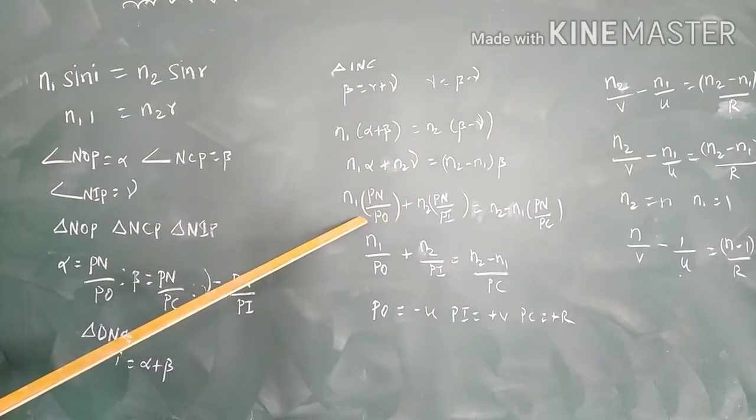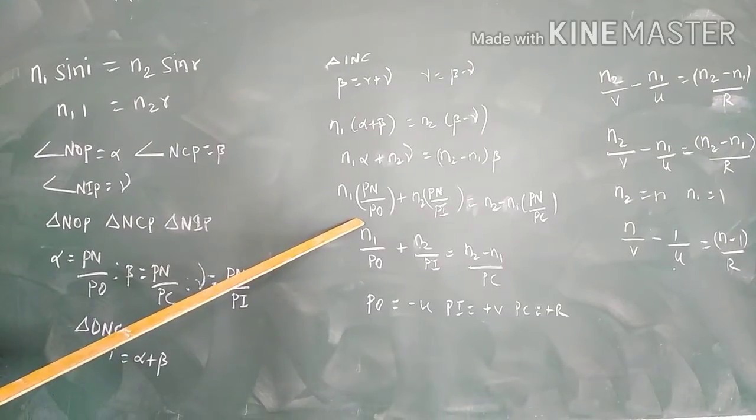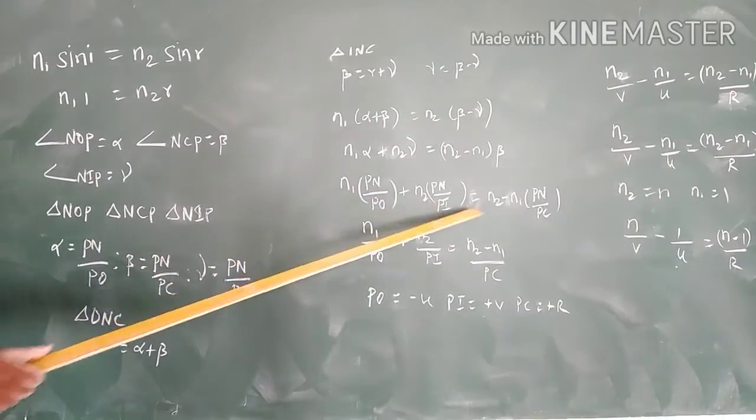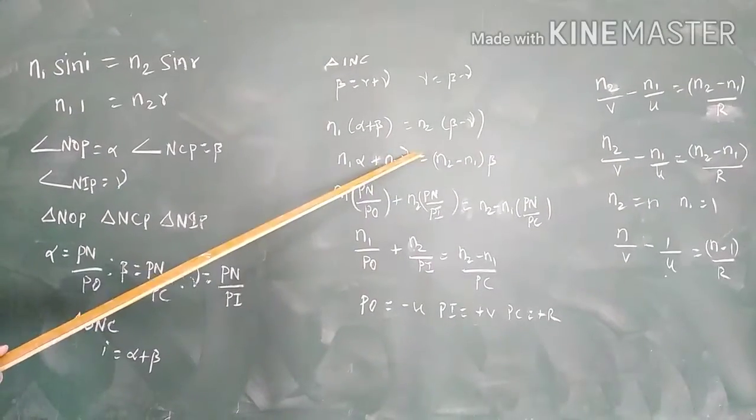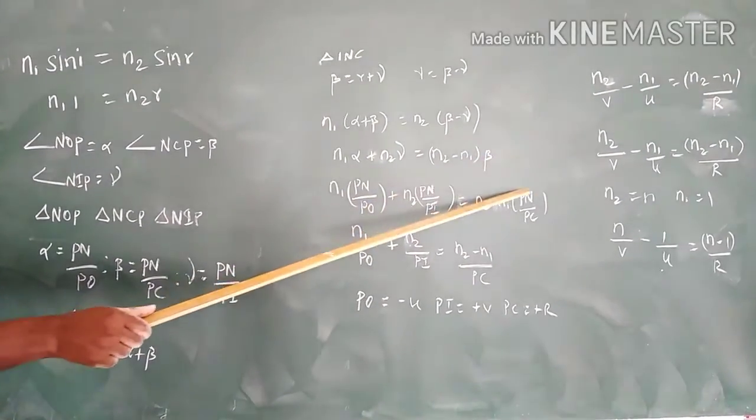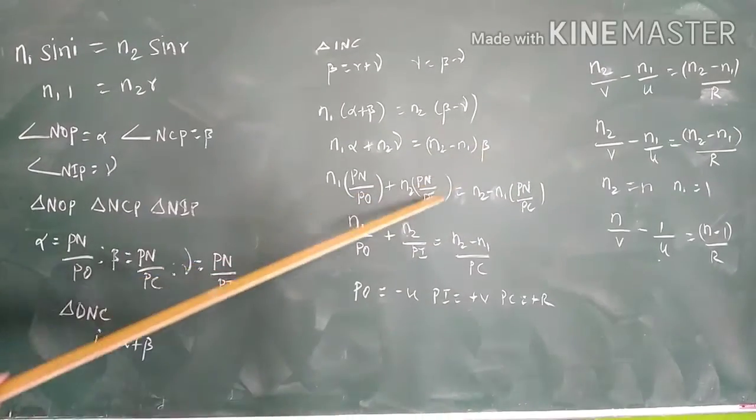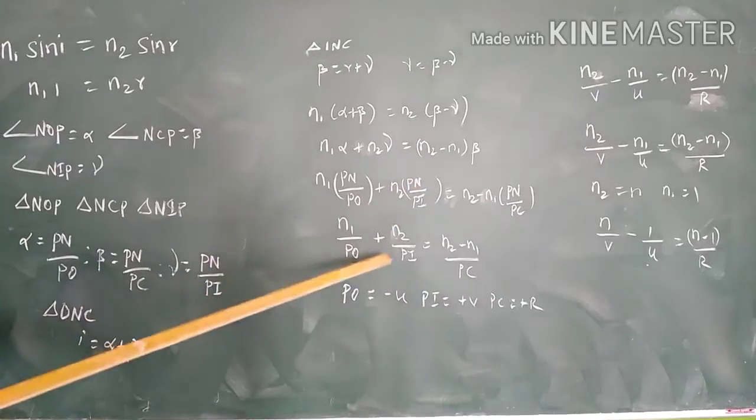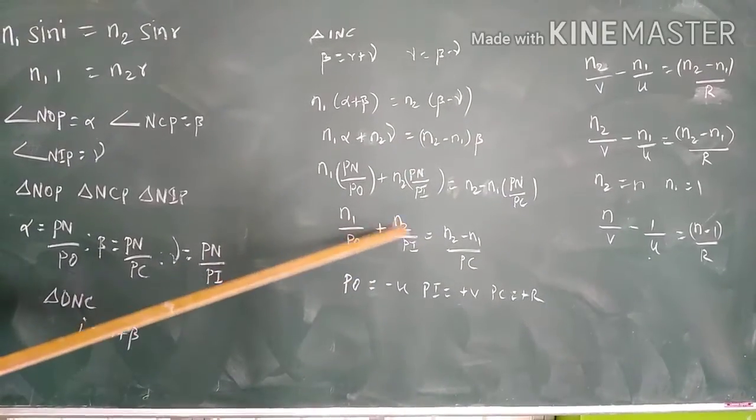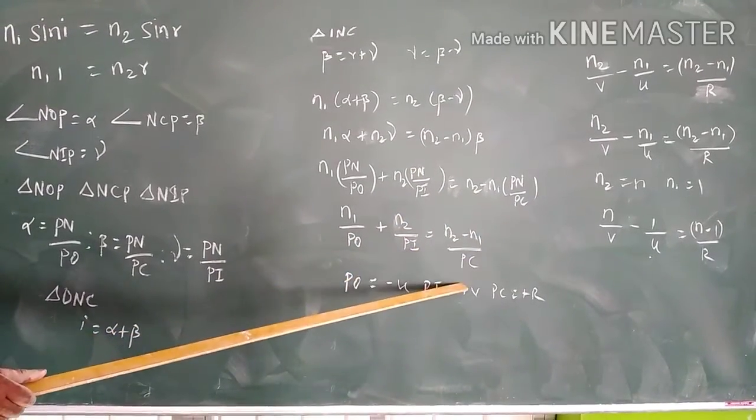Let's take n1 alpha and n2 gamma and substitute. Alpha is PN by PO, gamma is PN by PI, beta is PN by PC. We can write n1 by PO, n2 by PI, and (n2 minus n1) by PC.